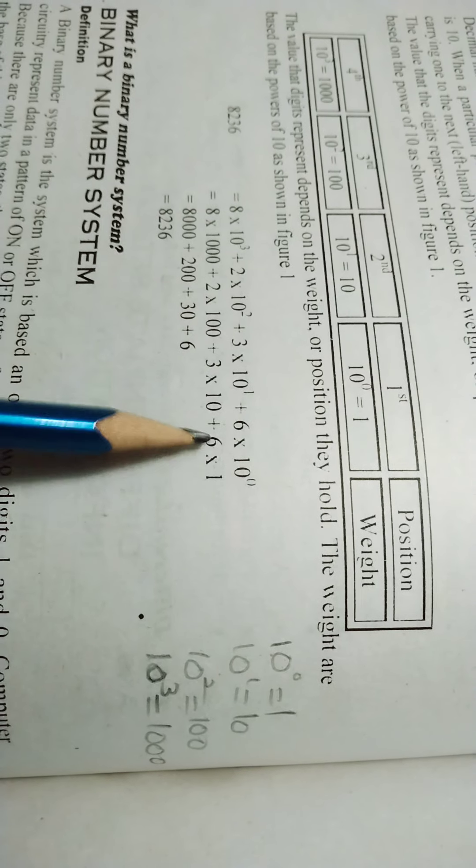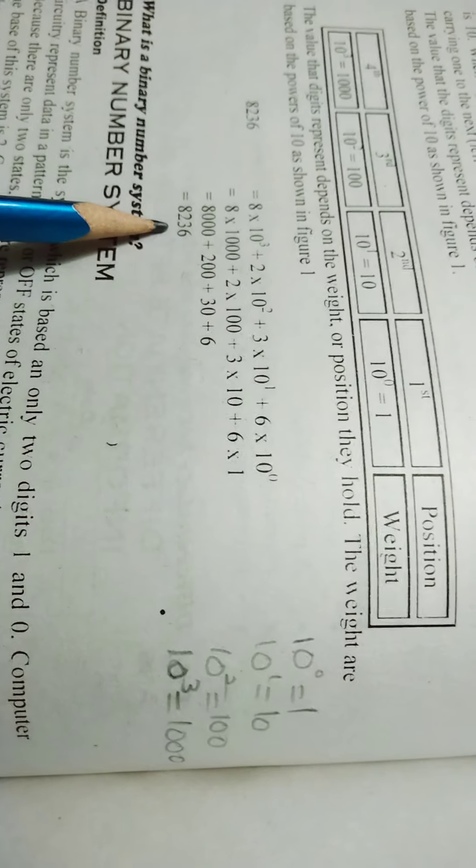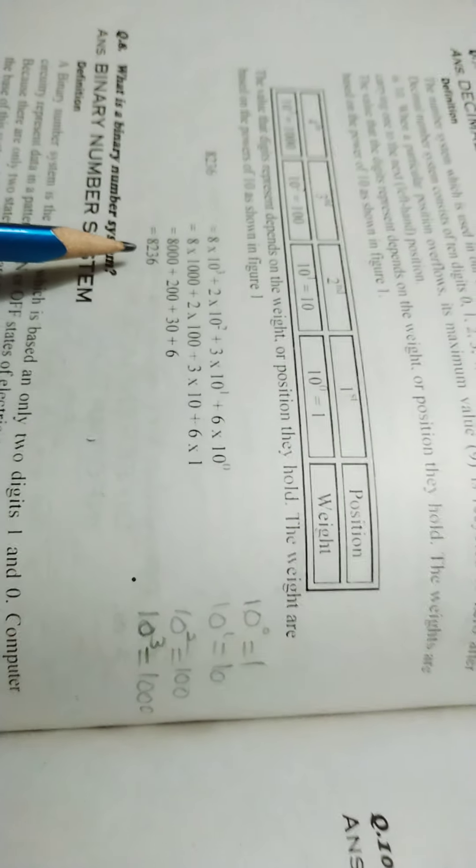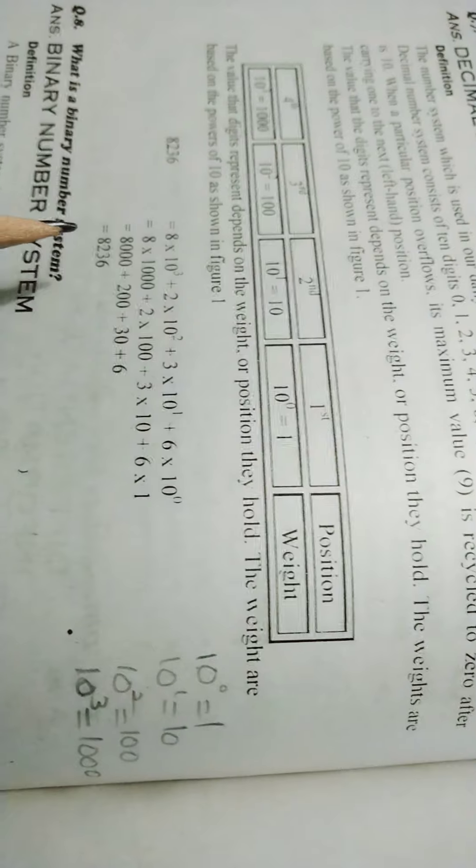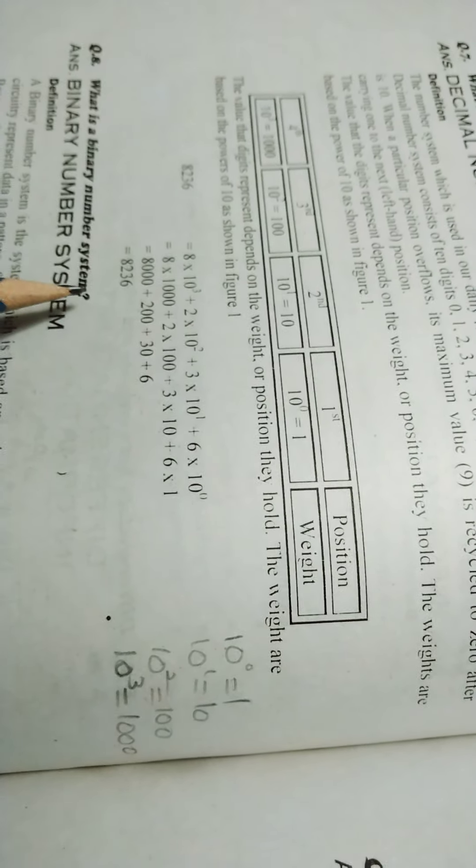3 tens are 30, and 6 ones are 6. We add all these together. This is our answer from the decimal system. We can validate this with binary or other systems.